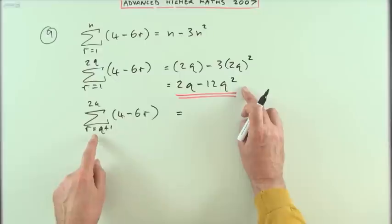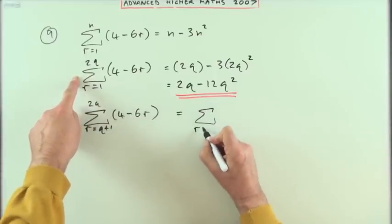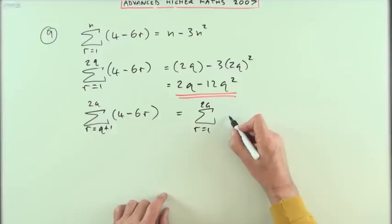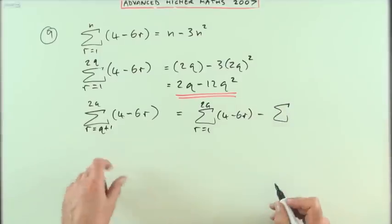So I mean it would be the same as that, it would be sigma r equals 1 to 2q meaning the whole lot, but take away, I better put the wee bit in, 4 minus 6r, but take away the first part that you were ignoring, which means you were starting at 1 and only going up to q.